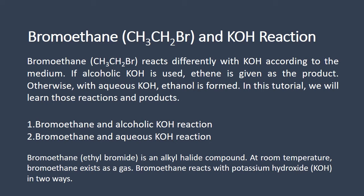Bromoethane reacts with potassium hydroxide in two ways: one is the bromoethane and alcoholic potassium hydroxide reaction, and the second is the bromoethane and aqueous potassium hydroxide reaction.